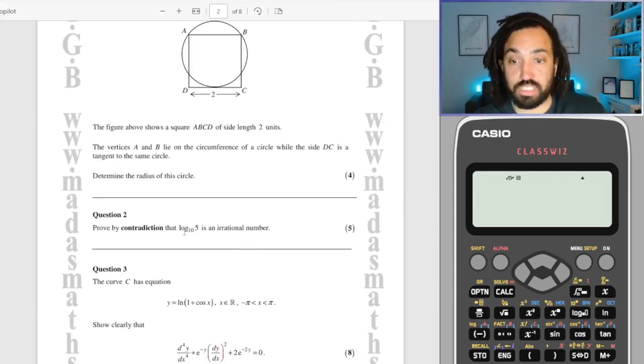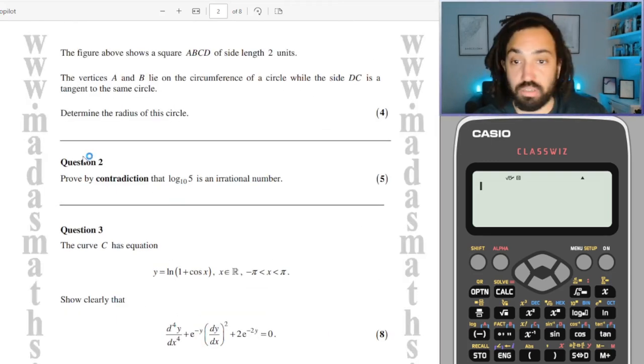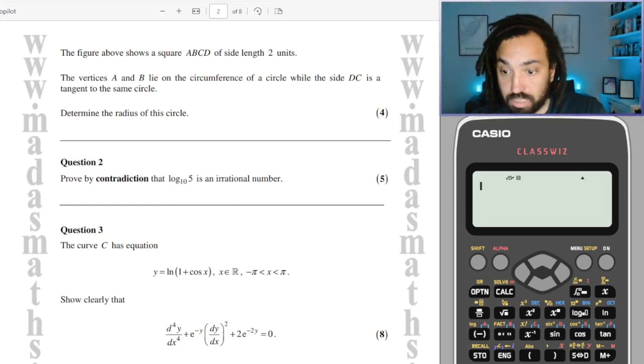Prove by contradiction. Oh, we haven't done many proof questions actually, so why not, this sounds fantastic. That log base 10 of 5 is an irrational number.